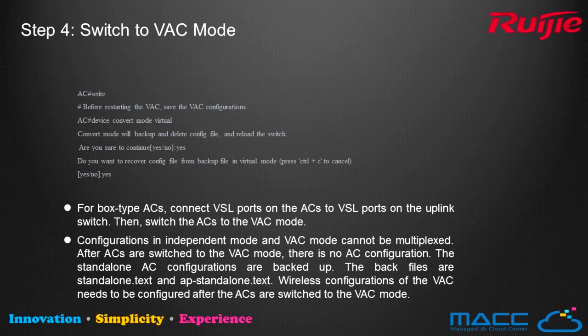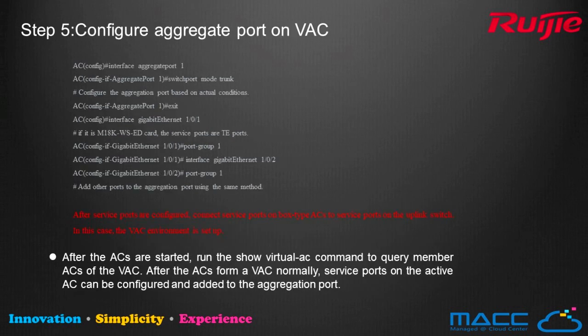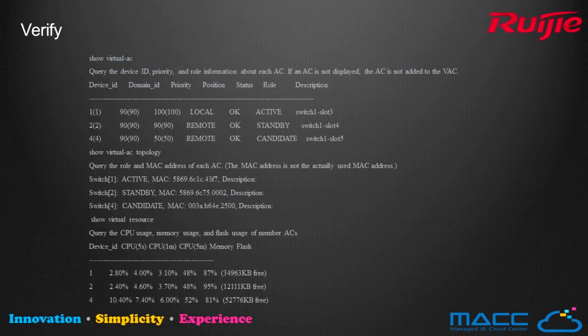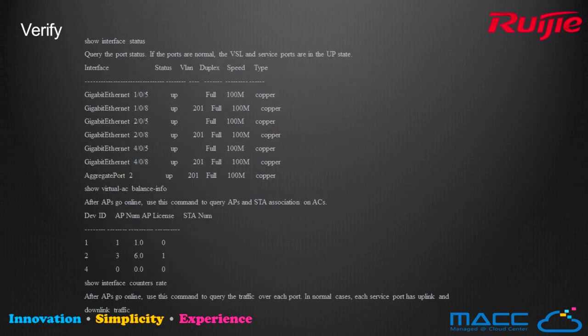Step 4: Switch to VAC mode. After all basic configuration is done, manually back up the AC settings and AP configuration, then switch the AC into virtual mode for virtualization. Step 5: Configure the aggregation port on VAC. After virtualization is complete, configure an aggregation port on the VAC. Once all virtual members are in virtualization, use the command 'show virtual AC' to verify status, 'show virtual AC topology' to verify topology, and 'show interface data' to confirm interface names are renamed based on Device ID. Use 'show virtual AC banner info' to view AP and station summary information.